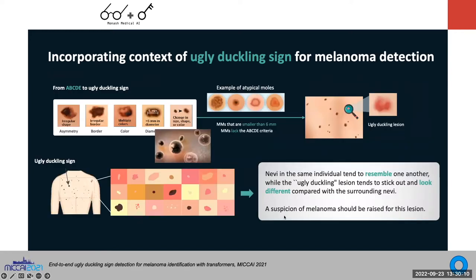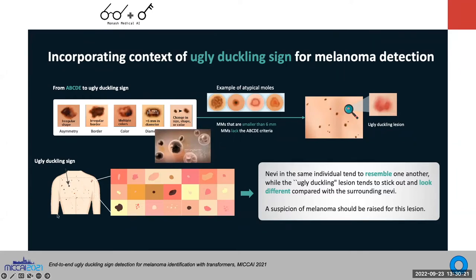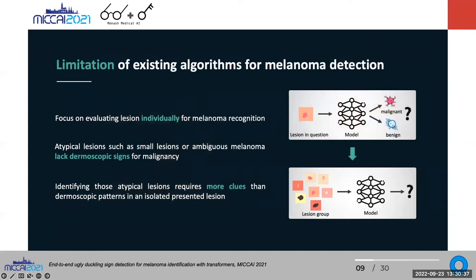Another interesting topic is the 'ugly duckling' algorithm — instead of comparing person to person, we compare lesion to lesion. We collect hundreds of lesions from one individual and use AI to find the top five highest-risk lesions, potentially melanoma, compared to the rest. The traditional loop puts a lesion into a CNN model to classify it as malignant or benign. In the ugly duckling problem, we're inferring across multiple lesions — possibly a few hundred — from one person, and want to select the top five.